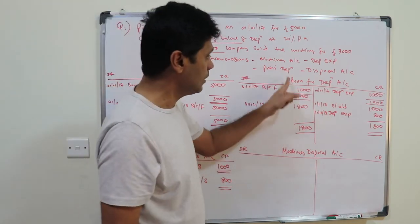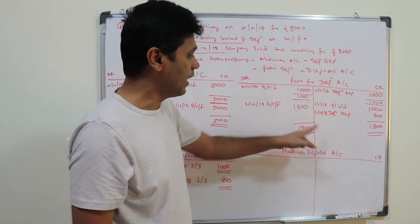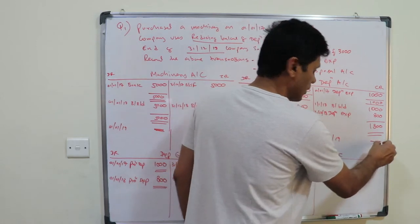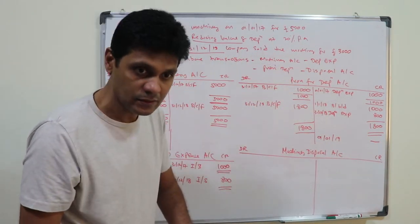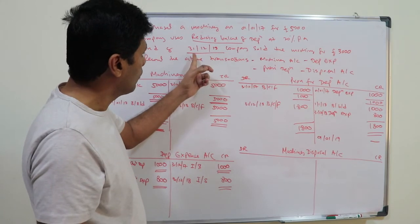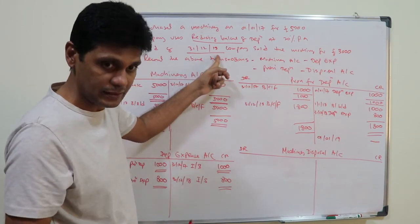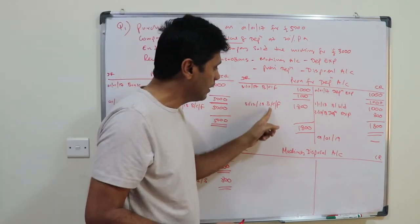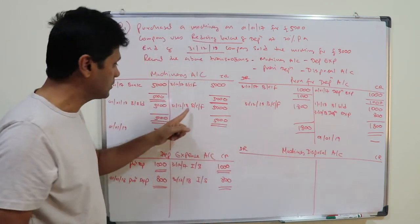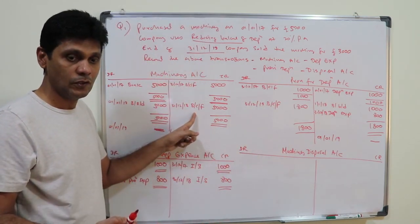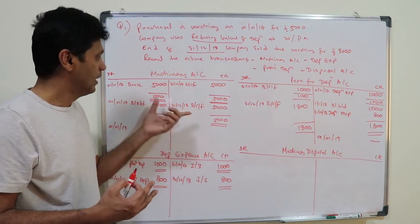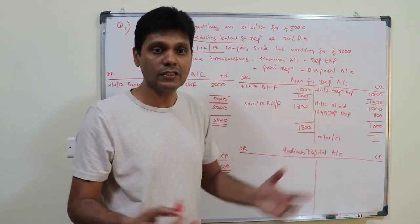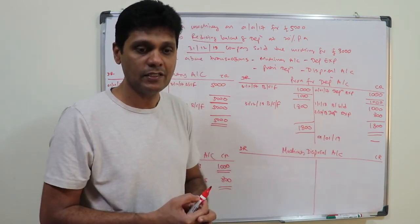If the machine existed into 2019, you could carry it forward, but since it was sold on 31st December 2018, do not write balance carried forward here. Instead, you transfer both the machinery account and the provision for depreciation account to the disposal account on 31st December 2018.